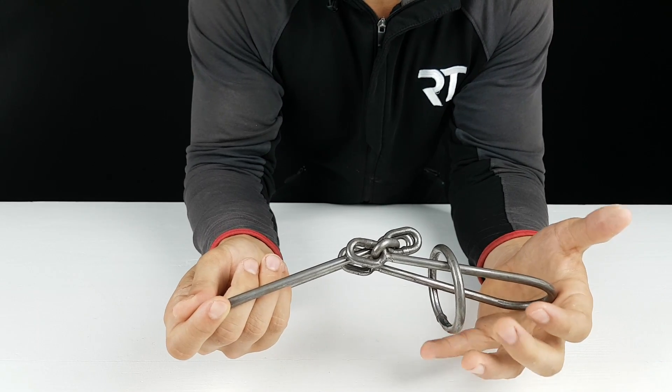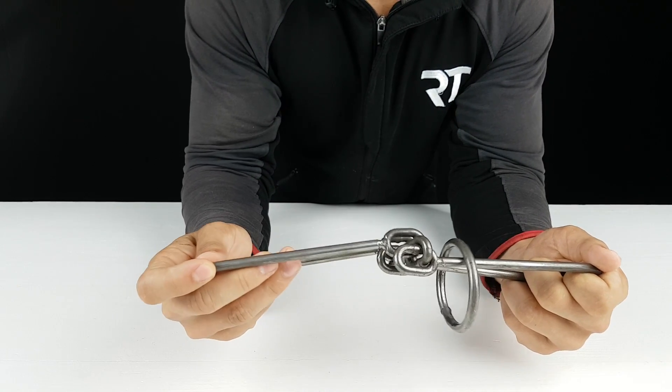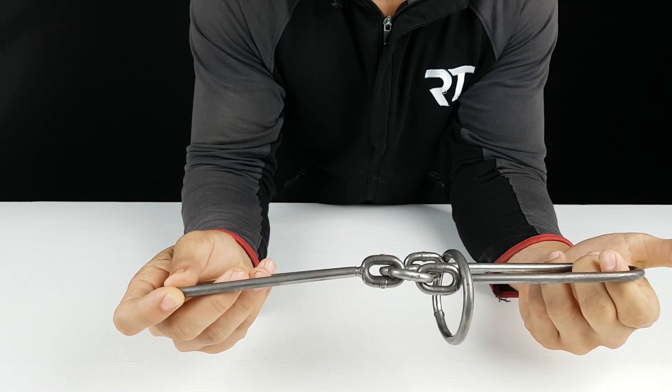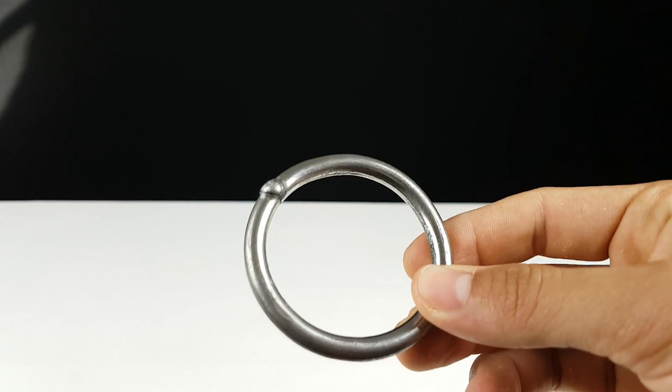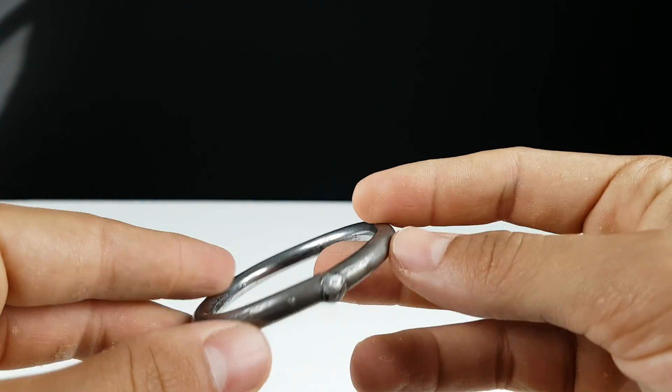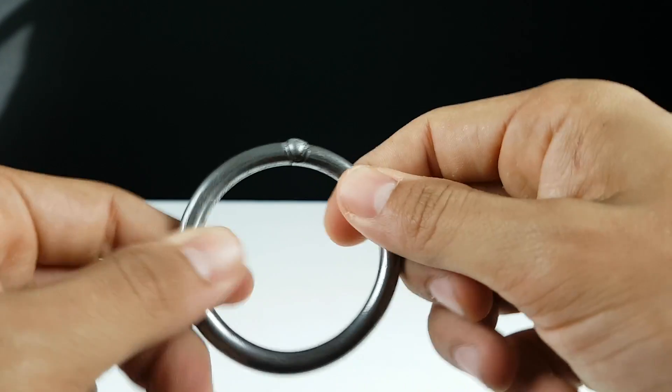So I will give you some more close-up loops, and then the challenge starts. This is the metal ring. As you can see, you can't open it, you can't bend it, you can't destroy it in any way.